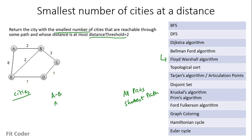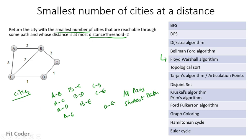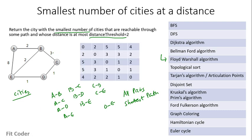Floyd-Warshall finds shortest paths from A to B, A to C, A to D, A to E, B to C, B to D, B to E, C to D, C to E, and D to E — all combinations. The output is a 2D matrix. From it: distance between A and B is 2, between B and C is 3, between C and D is 1, and between D and E is 1.